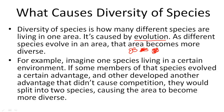For example, imagine one species living in an environment. If some members of that species evolved to a certain advantage, like black moths, and others developed another advantage that didn't cause competition, they would split into two species, causing the area to become more diverse.